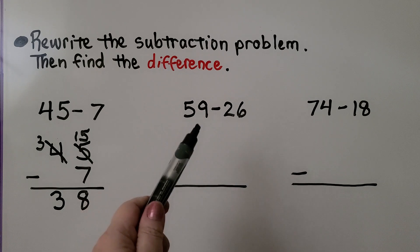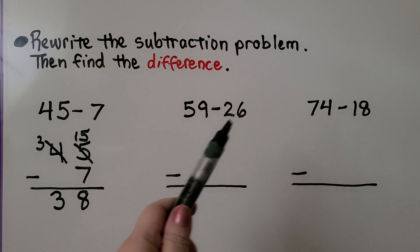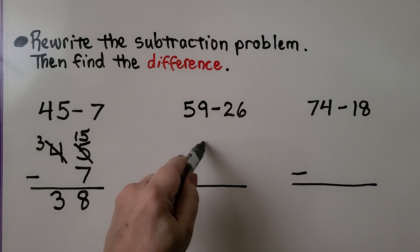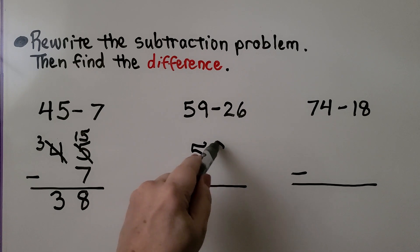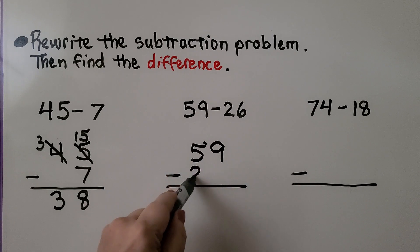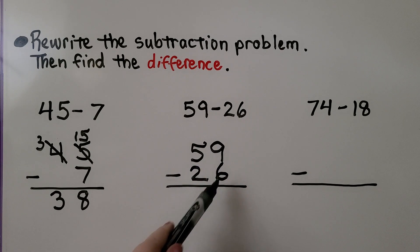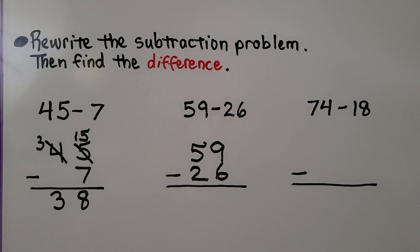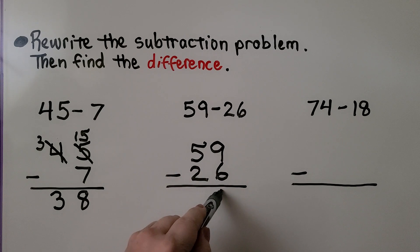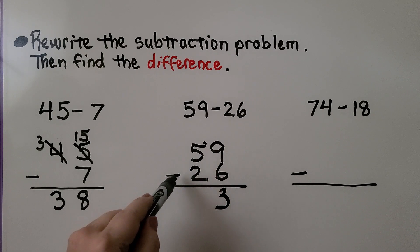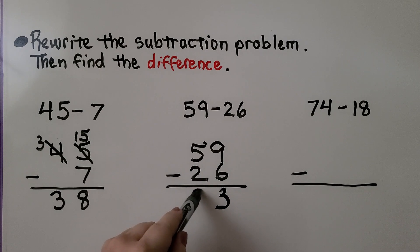Here we have 59 minus 26. They both have tens and ones, so we write 59 and 26 in columns. We have nine ones and we need to take away six ones. Do we have enough ones? Yes! Nine minus six is three, and five tens minus two tens is three tens. It's equal to thirty-three.